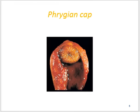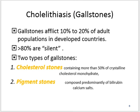This is the phrygian cap. You can find a cap above a stone formation. Cholelithiasis — that is gallstones — afflicts 10% to 20% of adult population in developed countries. More than 80% are silent. There are two types of gallstones: cholesterol stones, containing more than 50% of crystalline cholesterol monohydrate, and pigment stones, composed predominantly of bilirubin calcium salts.